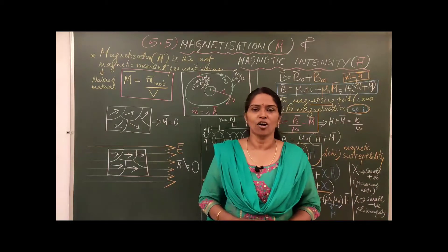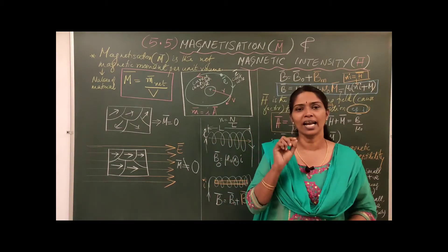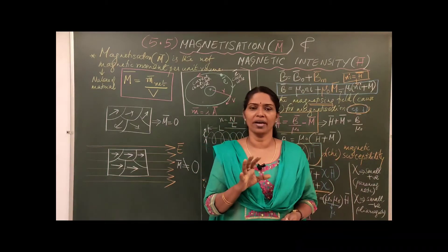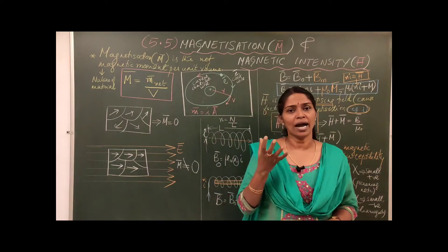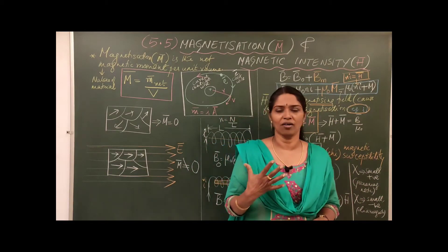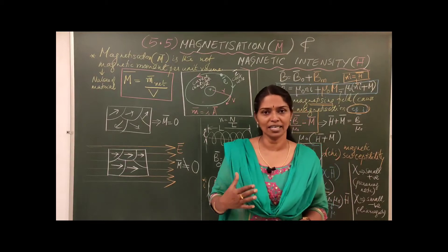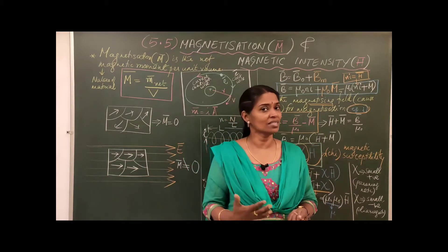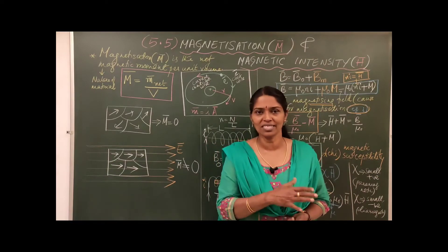In that topic we are underlining a few terms which we require for identifying materials like dia, para, ferro and all. So we have enough magnetic materials and magnets all around us. Even earth itself is a magnet that we discussed in the last session.